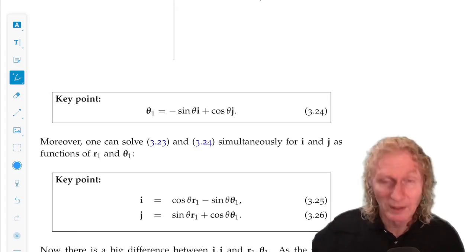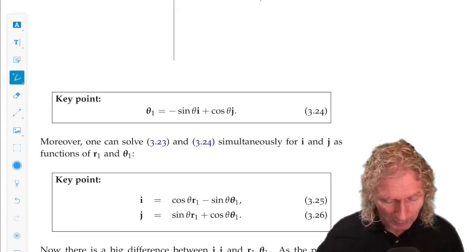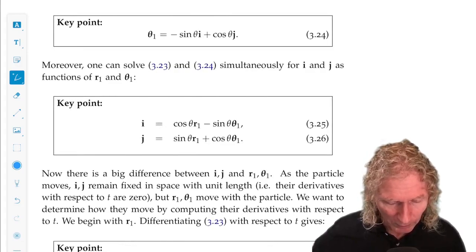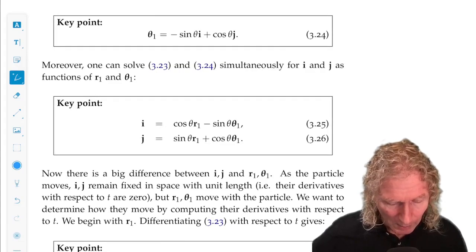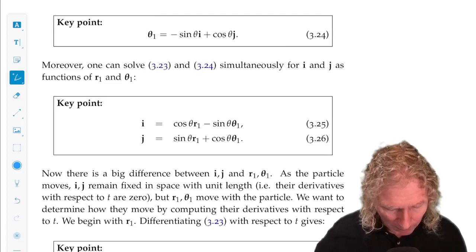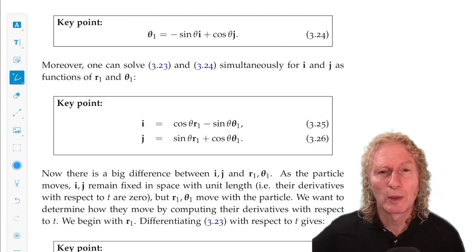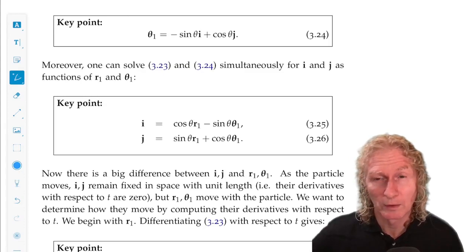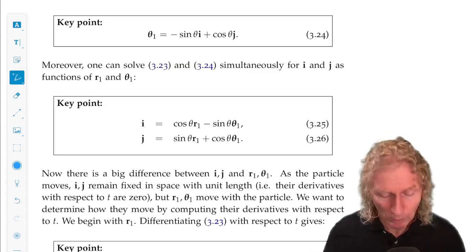Now with a little bit of algebra, with this definition for r1 and theta1, you can write i and j in terms of r1 and theta1. And now you have a complete relationship between the two sets of unit vectors: i, j and r1, theta1.